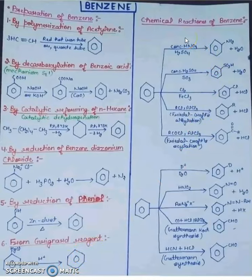Now chemical reactions of benzene: nitration gives nitrobenzene, sulfonation gives benzene sulfonic acid, halogenation with Cl2 and FeCl3, Friedel-Crafts alkylation, Friedel-Crafts acylation.